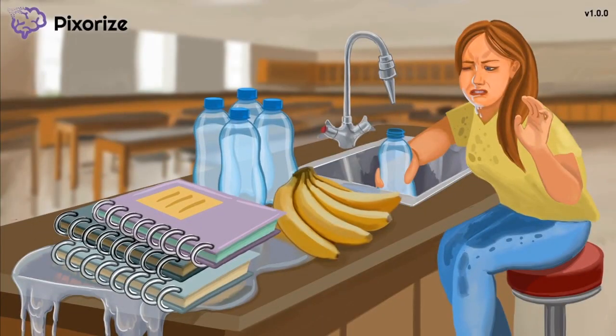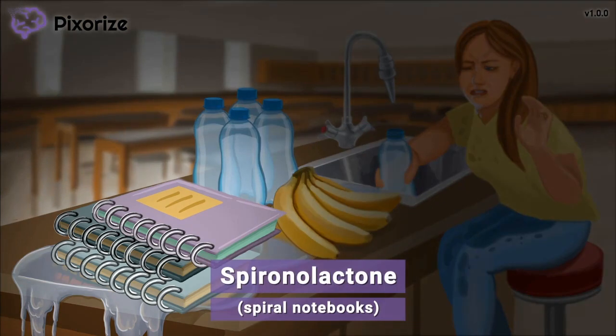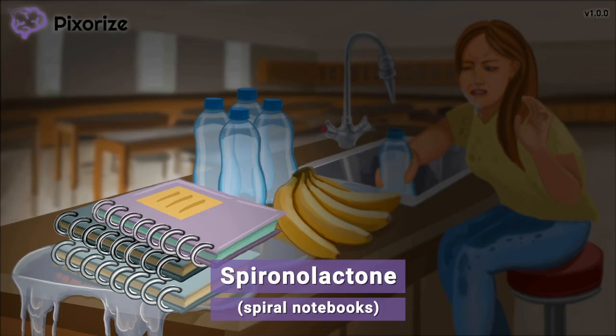This girl is the type of student who likes to be prepared. Today she's arrived at science class early and with a tall stack of spiral notebooks. These spiral notebooks are our symbol for the drug spironolactone, because spiral and spironolactone sound pretty similar. Spironolactone is a common drug that might pop up on your NCLEX, so let's anchor yourself to this spiral notebook to enter this scene.